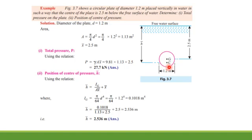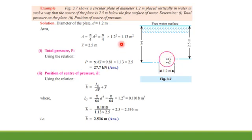Point C is the center of pressure, and its distance from the free water surface is denoted h-bar, which we need to find. But first we calculate total pressure using P = γAx̄, where γ is the specific weight of water = 9.81 kN/m³, A = 1.13 m², and x̄ = 2.5 m. Entering these values gives total pressure P = 27.7 kN.